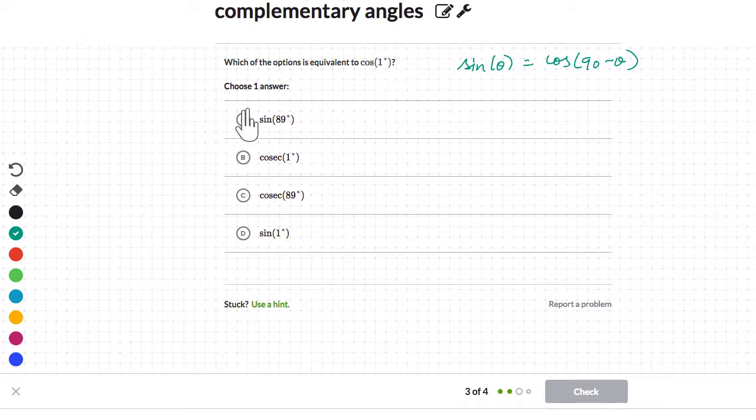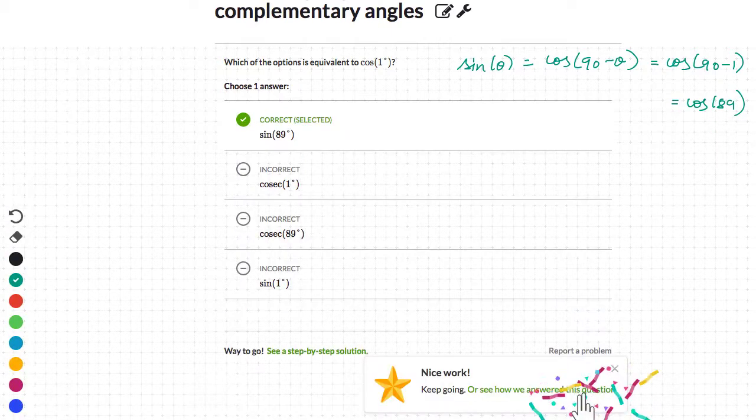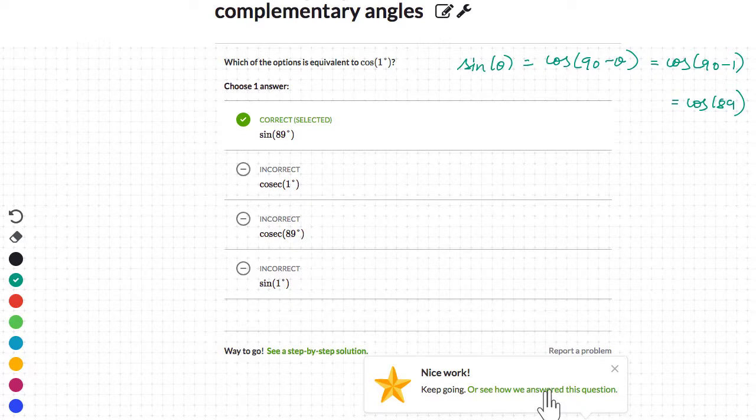So cos of one will be equal to sine of 89, which is 90 minus one. Let me just write that. Cos of 90 minus one, which is sine 89. Shouldn't skip steps, you know. Or see how we answer the question. Okay, I'll see how you answer the question.